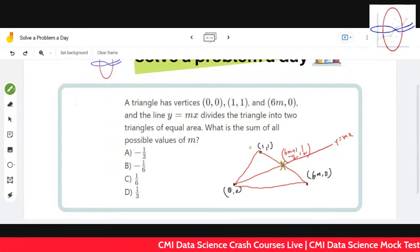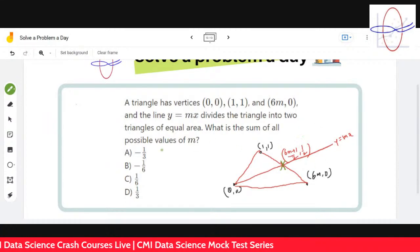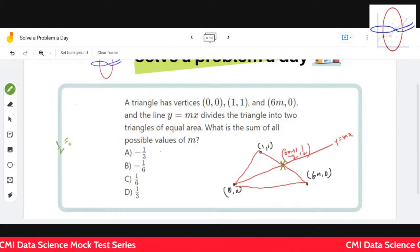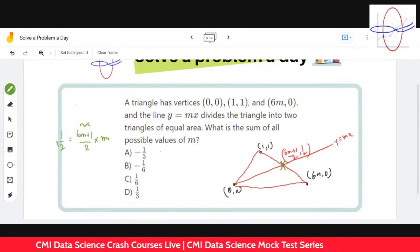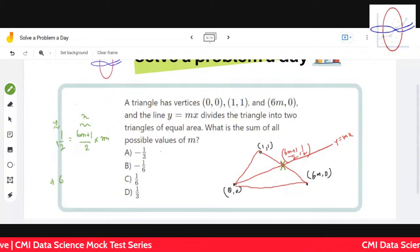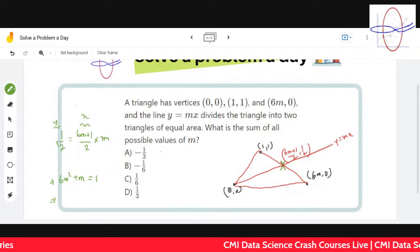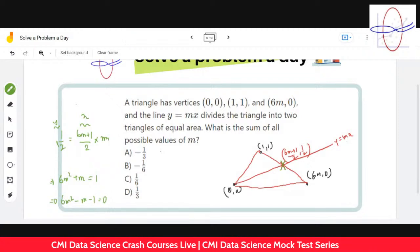If y = mx passes through this point, that means this point satisfies the equation. That means 1/2 must equal (6m + 1)/2 times m. Solving it, we get 6m² + m = 1, so 6m² - m - 1 = 0.